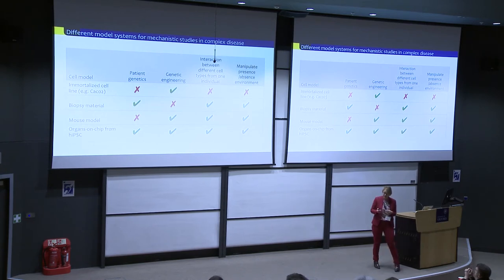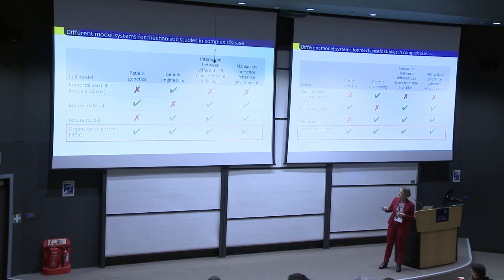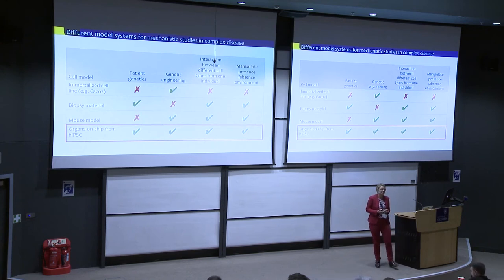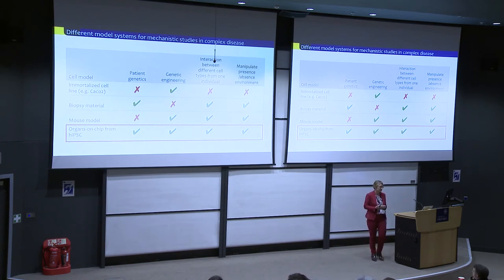One of the ways to go forward is to try to recreate tissues on the chip based on human induced pluripotent stem cells. That is really what we set out to do, and we were quite lucky to be awarded a big grant from the Dutch Research Council for ten years — which is unprecedented in the Netherlands — to really develop those tools.